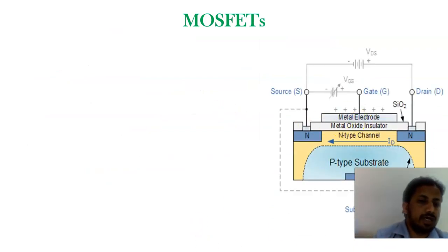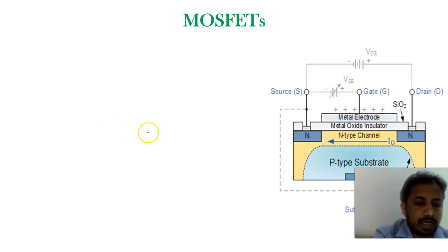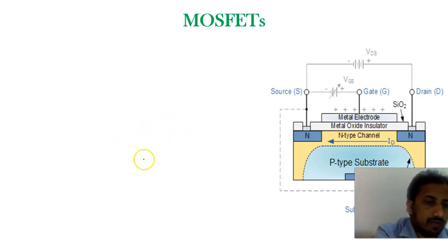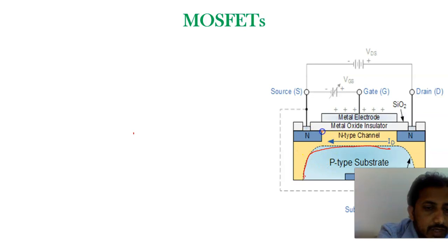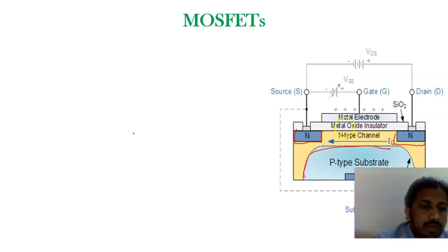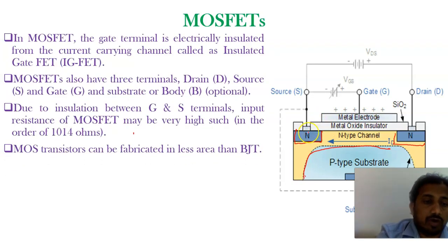First, how is the construction of a MOSFET done? It is fabricated using different fabrication steps. For an N-channel MOSFET, we take a P-type substrate. Onto the P-type substrate, we put two N-type dopings and a gate region using metal oxide. You can see the P-type substrate taken into consideration, with two N-type dopings forming a channel, and the middle gate region made up of oxide with metal contact cuts above it. This is the total structure of a MOSFET.